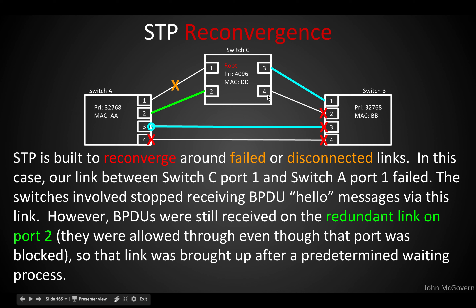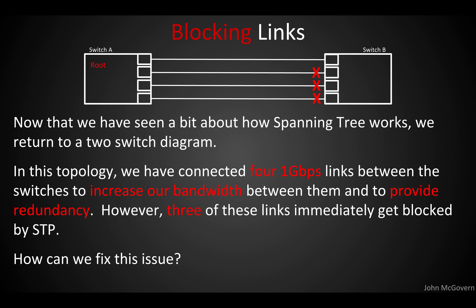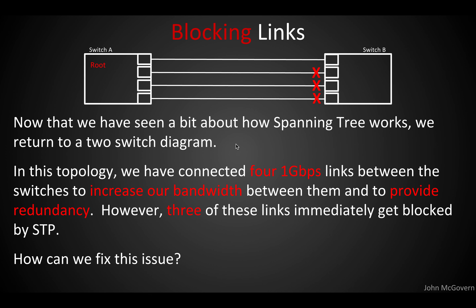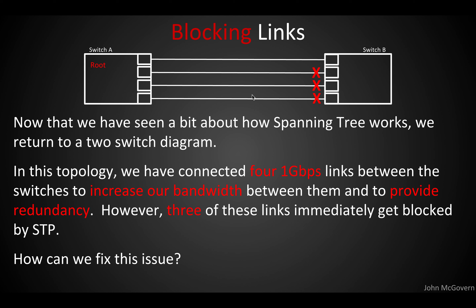Now we go back to a two-switch diagram to illustrate a point. We have four one-gigabit links here — we upped our link count from two to four. Because this bridge is the root, we block three of the four links. That's a bummer because we had four gigabits of capacity and we just shut off three of them. That's kind of inefficient. I wonder if we can fix this issue.